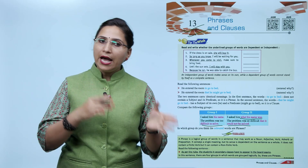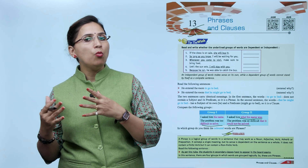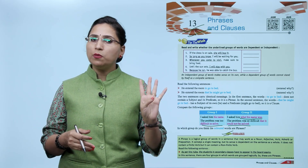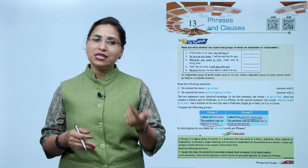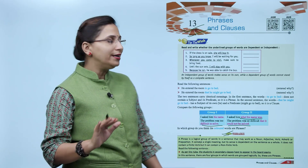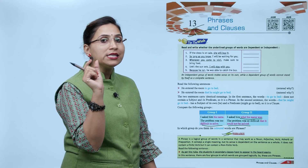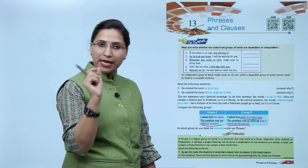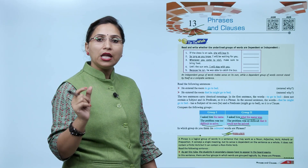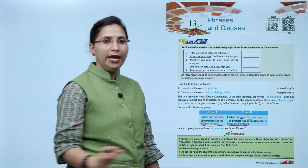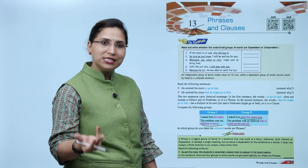Read the following sentence: As per the rules, the students in secondary classes have to appear in the board exams. In the sentence, there are four groups in which words are grouped logically, so these are phrases. Logic hona chahiye, bachchi, warna sentence complete nahi hoga. So 'as per the rules' is one phrase, 'the students in secondary class' is second, 'have to appear in' is third, and 'the board exams' is fourth. These four phrases together make the complete sentence.